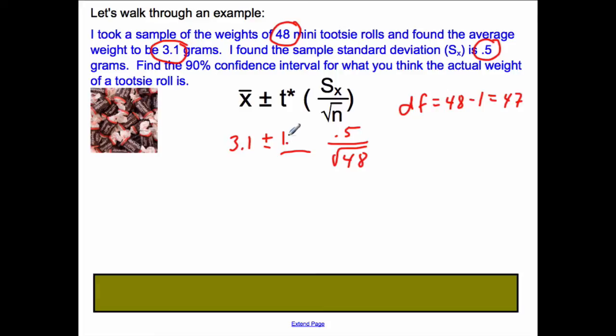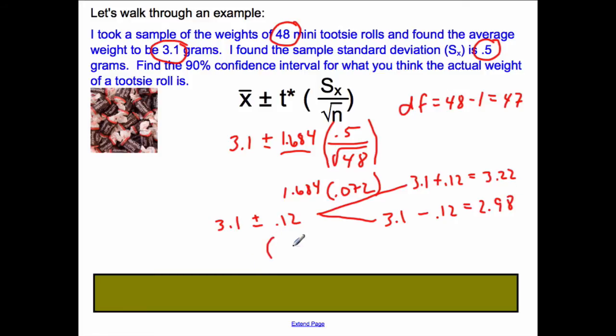1.684 times the standard error. Again, do this part, the standard error, in parentheses first. And you get 0.072 on your calculator. Multiply that by the 1.684, and you get your 3.1 plus or minus 0.12. So if I break that down to the two numbers, that gives me 3.1 plus 0.12, which is going to give me 3.22, and 3.1 minus 0.12, which is going to give me 2.98. So my 90% confidence interval is 2.98 to 3.22.